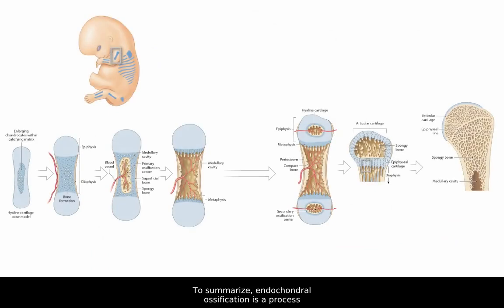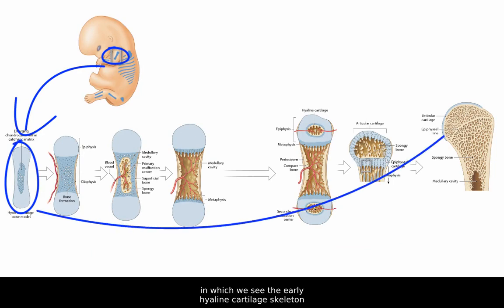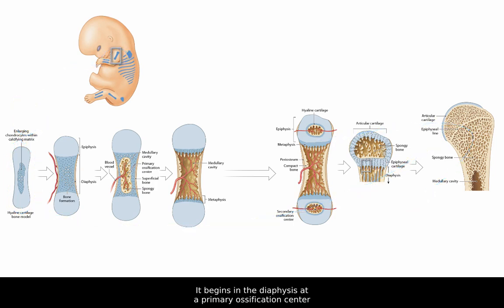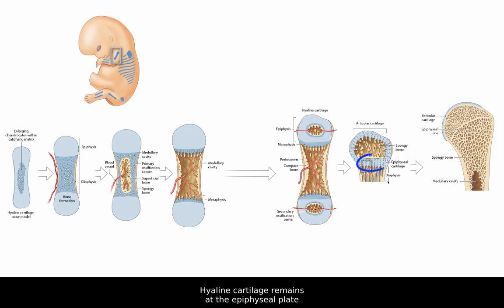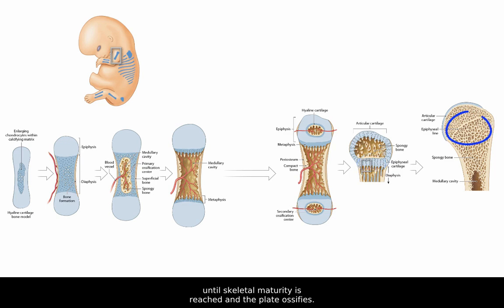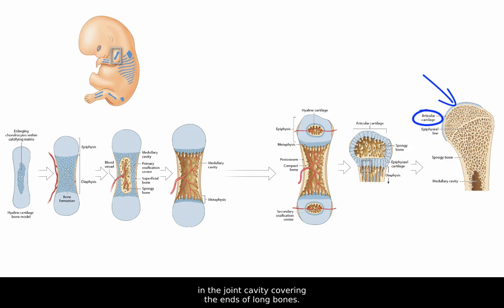To summarize, endochondral ossification is a process in which we see the early hyaline cartilage skeleton replaced with hard ossified bone. It begins in the diaphysis at a primary ossification center and proceeds at multiple secondary ossification centers in the epiphyses. Hyaline cartilage remains at the epiphysial plate to regulate lengthwise growth of the bone until skeletal maturity is reached and the plate ossifies. Articular cartilage remains in the joint cavity covering the ends of long bones.